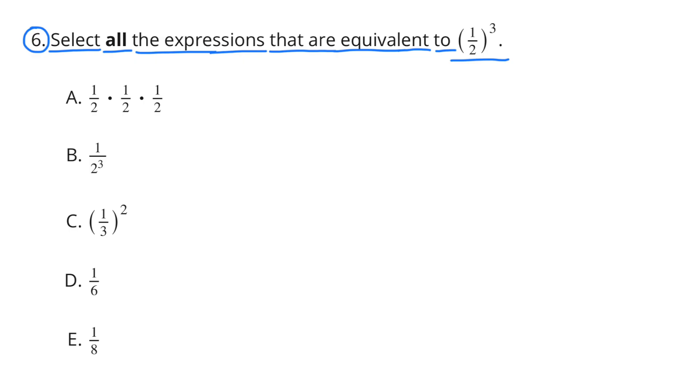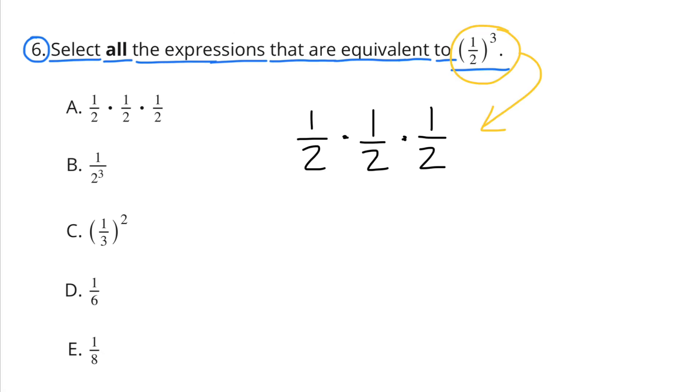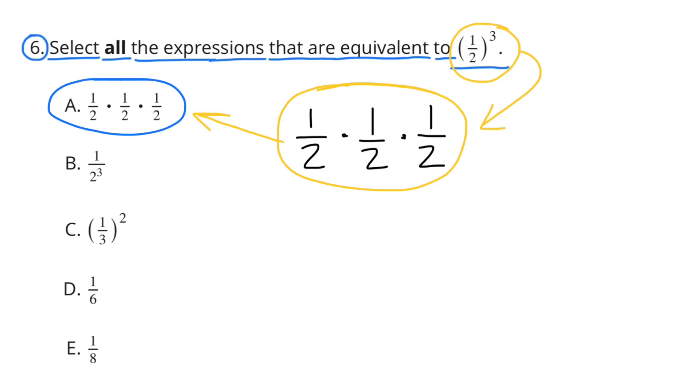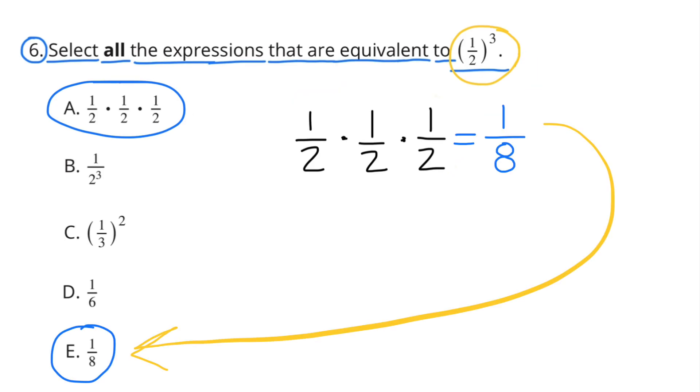Number 6. Select all the expressions that are equivalent to 1 half to the power of 3. 1 half to the power of 3, that's the same as 1 half times 1 half times 1 half. So we certainly can select A. And 1 half times 1 half times 1 half equals 1 eighth. So we can select E.